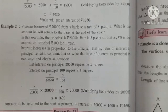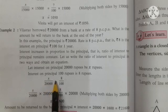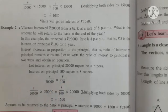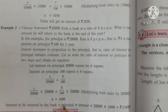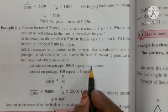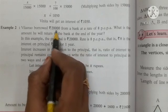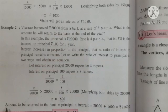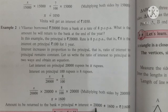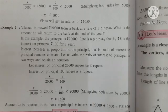Let interest on principal Rs 20,000 be Rs X. So our ratio will be X upon 20,000 is equals to 8 upon 100. After solving, X equals to Rs 1,600. X is our interest. Now we have to find the amount Vilasrao will return to the bank. He has to return the principal amount along with the interest. So amount to be returned to the bank is principal plus interest: Rs 20,000 plus Rs 1,600 equals Rs 21,600.